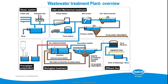First we have the sewage system where we pump the wastewater into the plant. The first treatment step is mechanical treatment. Normally there will be screening, a bar screen, fat and sand removal, and then the primary clarifier. From here we can remove a part of the TSS content and also a part of the organic content. Normally we measure it by BOD or COD parameter.